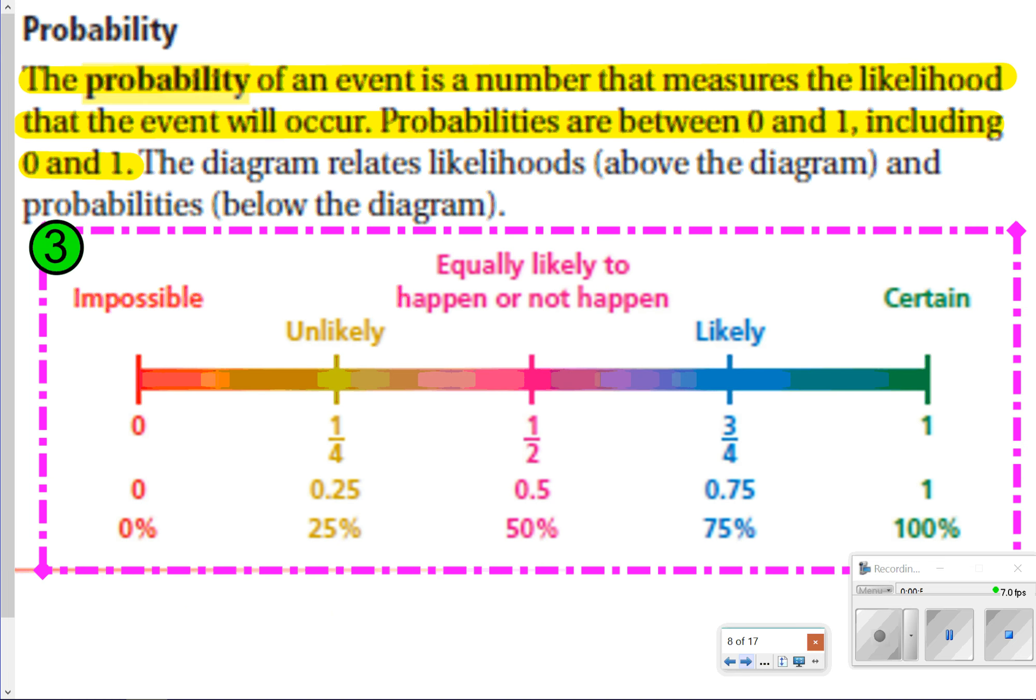The next thing we're going to write down is this probability scale. What you want to make sure you know is probability is when your number is between those numbers 0 and 1 and it just tells you the likelihood of that event occurring. This is the scale of likelihood, so what I want you to do is go ahead and copy the scale, just the scale in your notes.